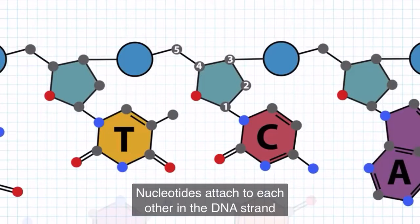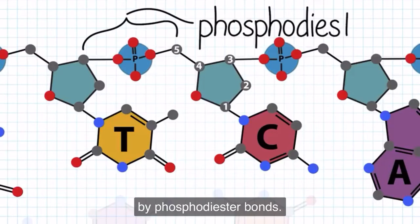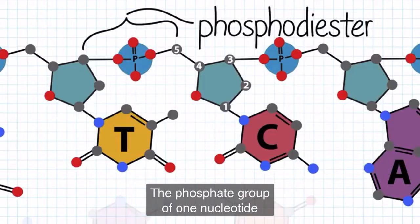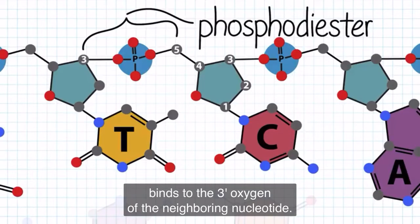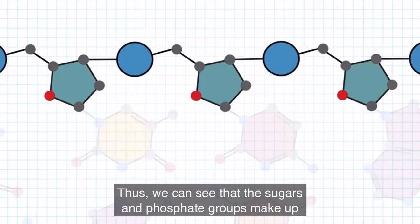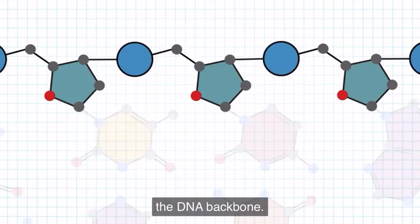Nucleotides attach to each other in the DNA strand by phosphodiester bonds. The phosphate group of one nucleotide binds to the 3' oxygen of the neighboring nucleotide. Thus, we can see that the sugars and phosphate groups make up the DNA backbone.